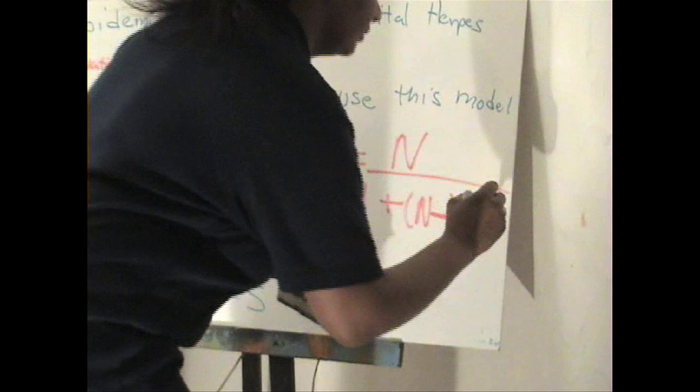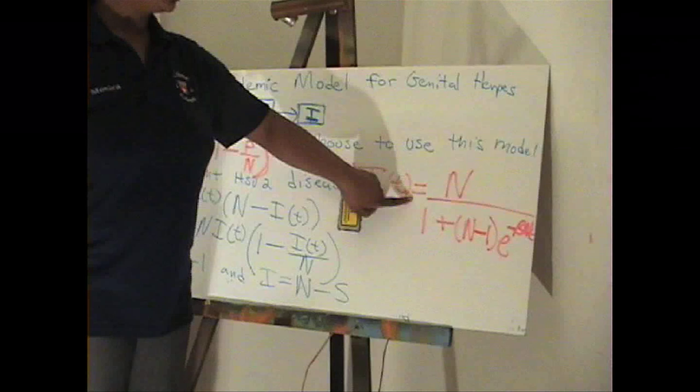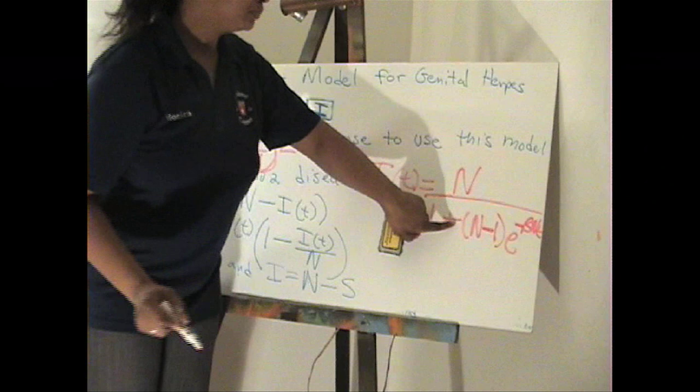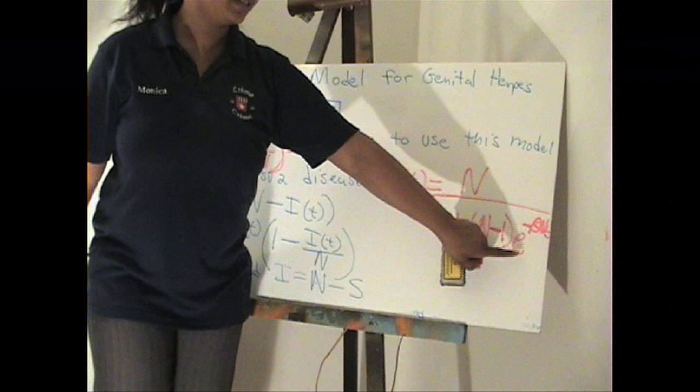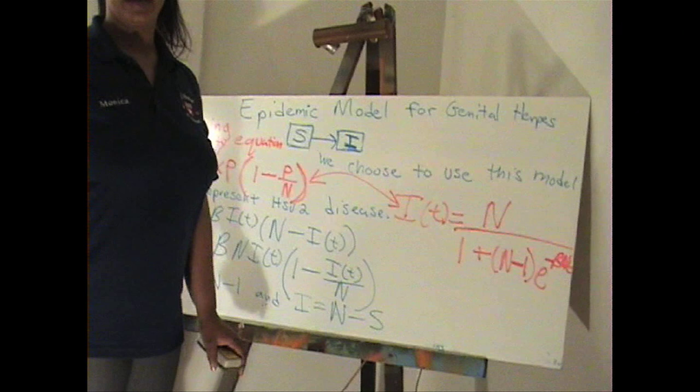So we come up with this logistic equation where I(t) is equal to N all over 1 plus (N minus 1) times e to the negative beta·N·t. So I(t) equals N over (1 plus N minus 1 times e to the negative beta·N·t), where t represents time, N represents the total population, and beta is our constant contact rate.